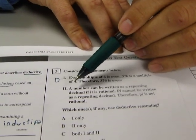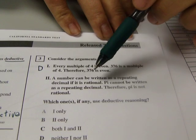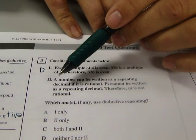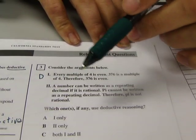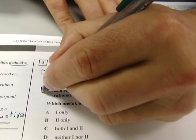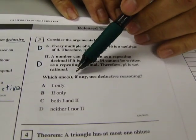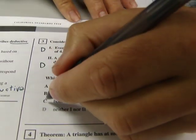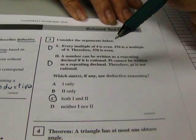A number can be written as a repeating decimal if it is rational. That sounds like a rule. The second one says pi cannot be written as a repeating decimal. That sounds like another rule. Therefore, pi is not rational. A conclusion based on two rules that also sounds like deductive reasoning. So which ones, if any, use deductive reasoning? They both do. Both one and two use deductive reasoning because they both use rules to draw a conclusion.